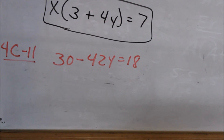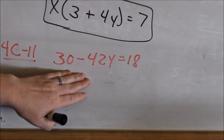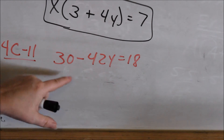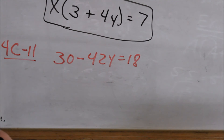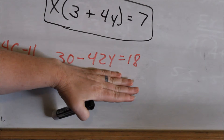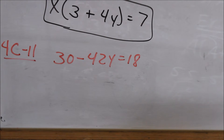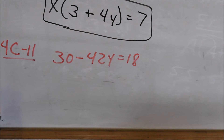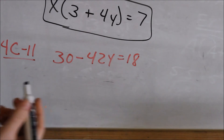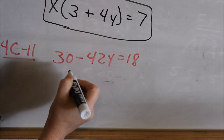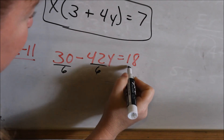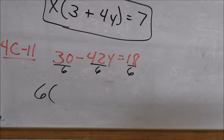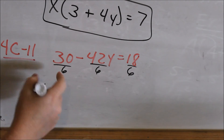Moving to problem 4C11 — on this one, they are asking you to solve for the unknown. There are two ways: you can solve it as-is, subtracting 30 and then dividing both sides by negative 42, or you can make the numbers smaller by factoring out a number. Looking at 30, 42, and 6 — they can all divide by 6, so we factor a 6 out of each term. Write the 6 in front, then 30 divided by 6 is 5.